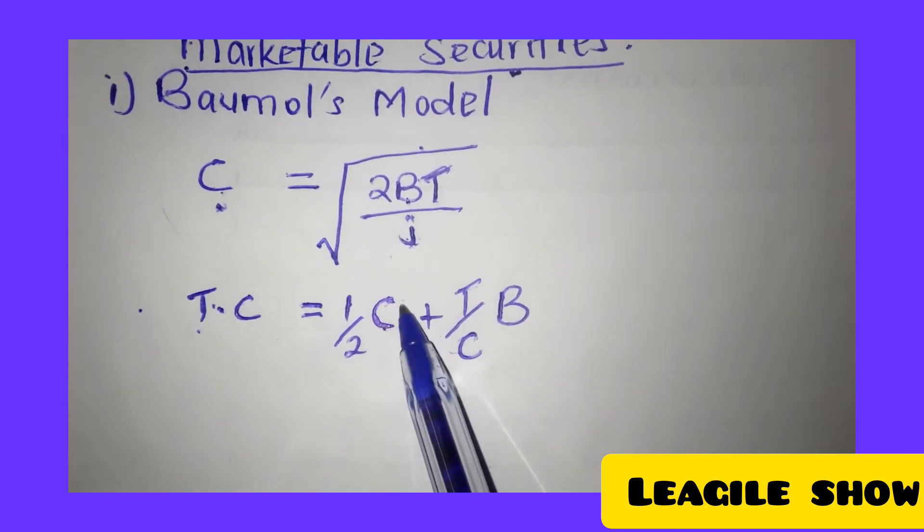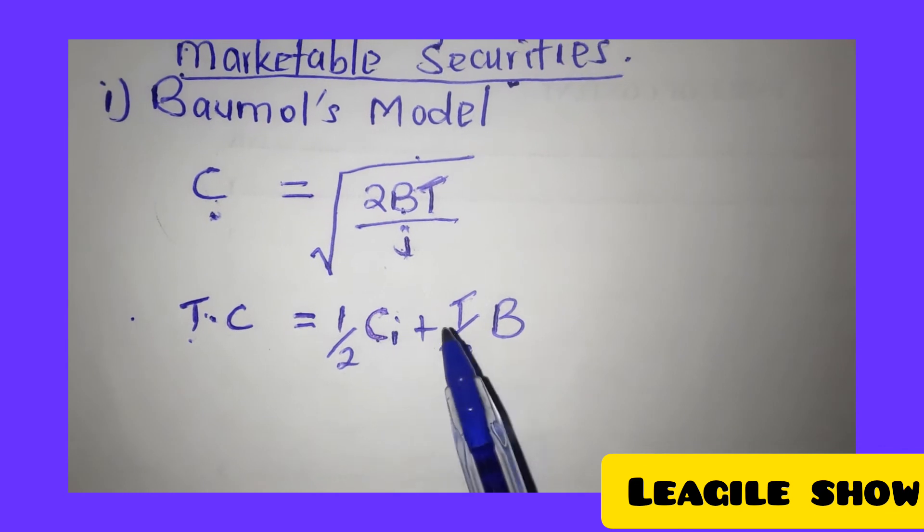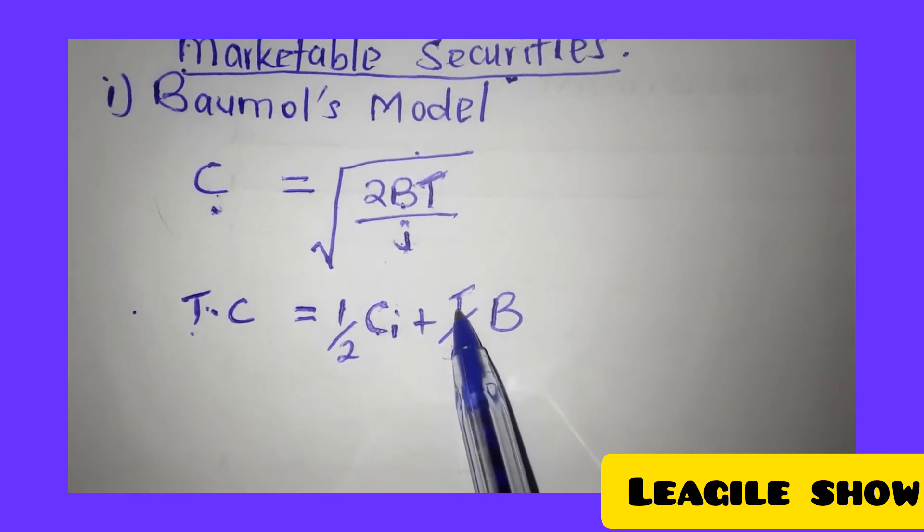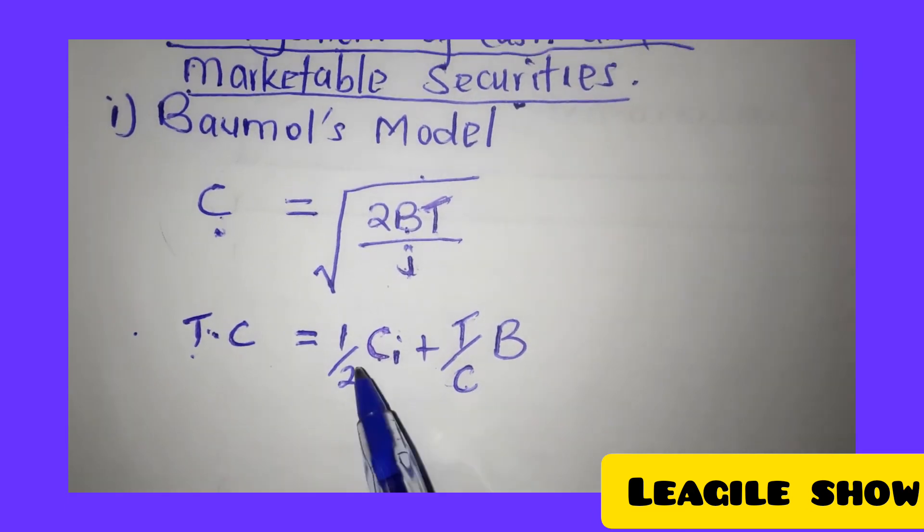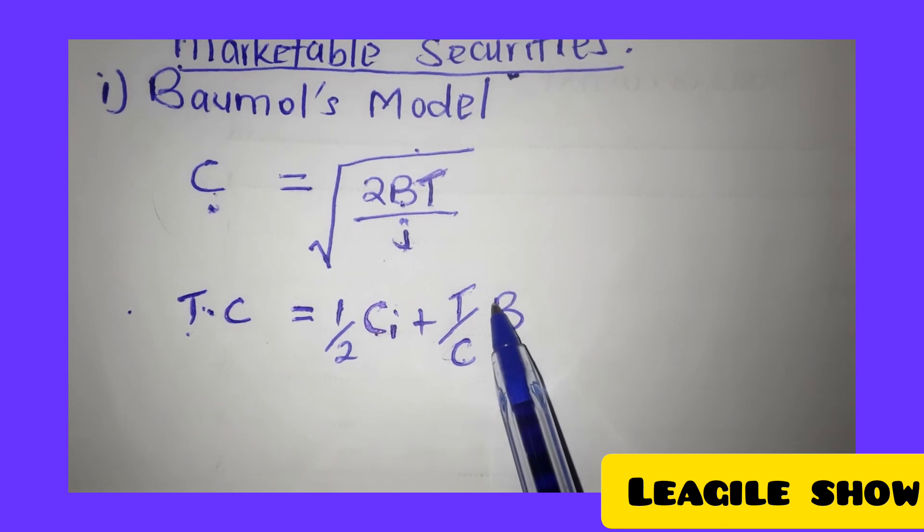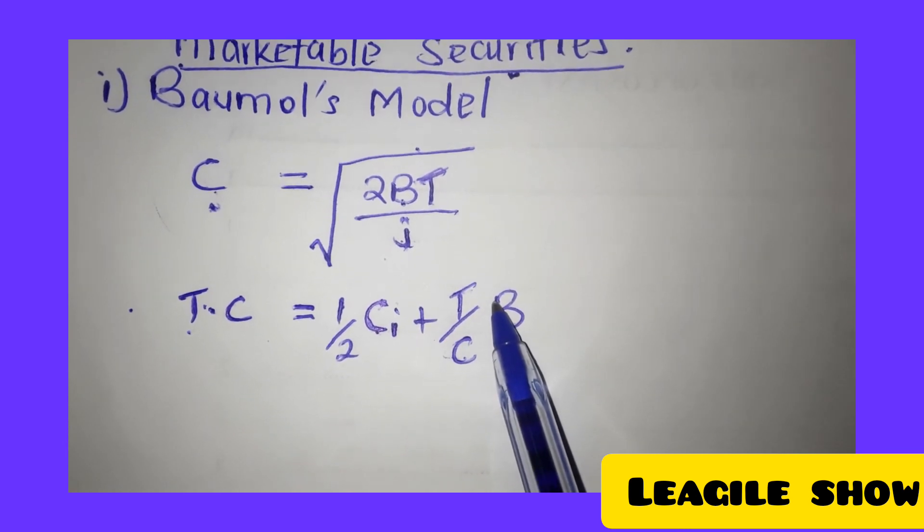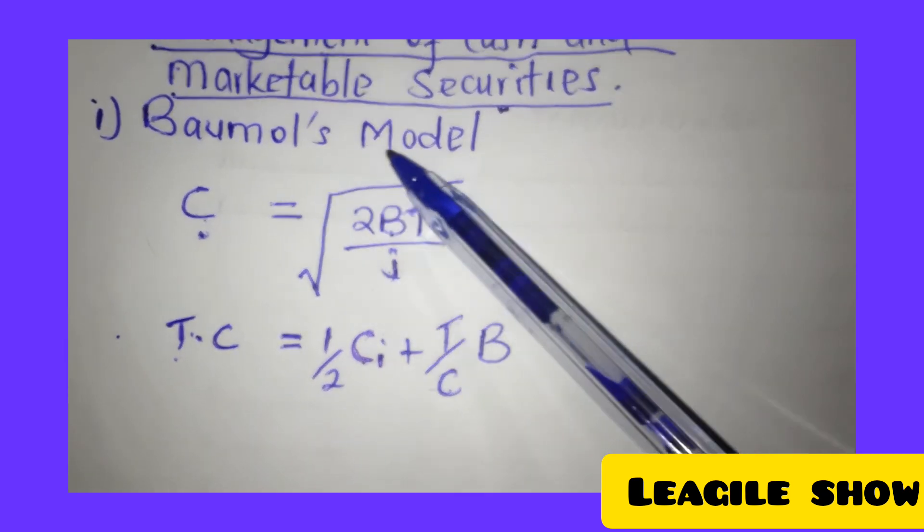i is the opportunity cost of holding cash. T in this case is the total annual cash requirements. C is the same as that. Then B in this case is the fixed cost of making a security trade. That is how they relate the Baumol's model and the economic order quantity model. They tend to be similar.